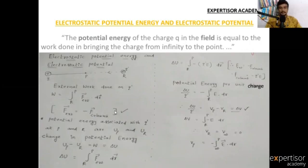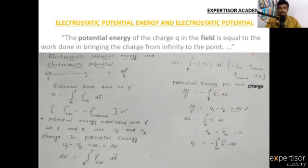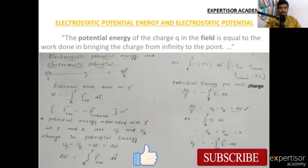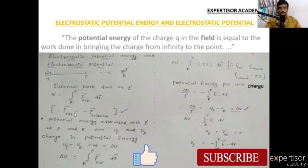The external force applied to q' acts in the opposite direction to the Coulomb force. The point charge plus Q and the testing charge together generate a Coulomb force. The external force is equal to the negative of the Coulomb force.